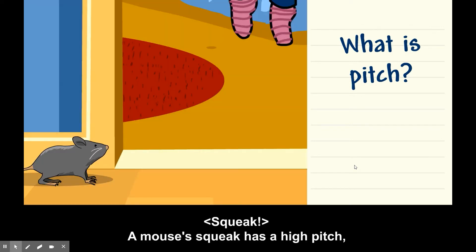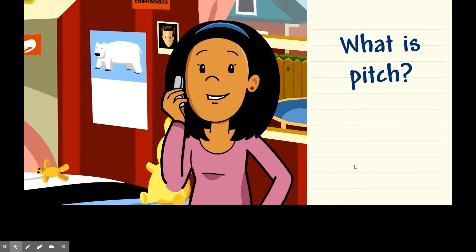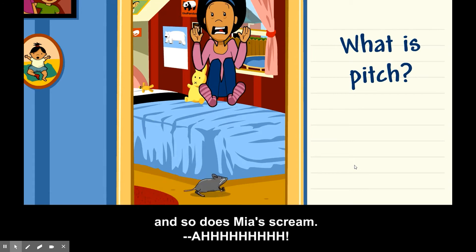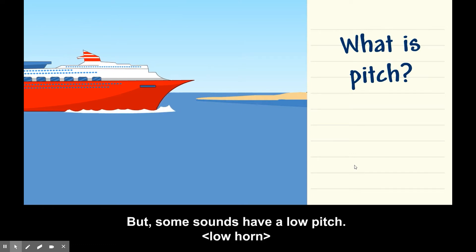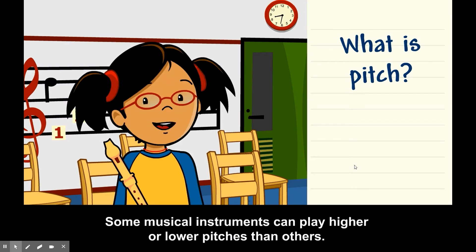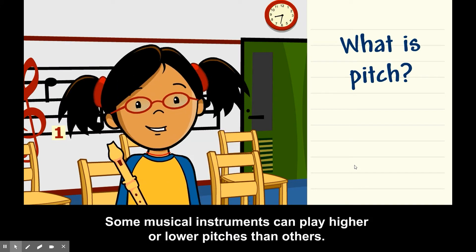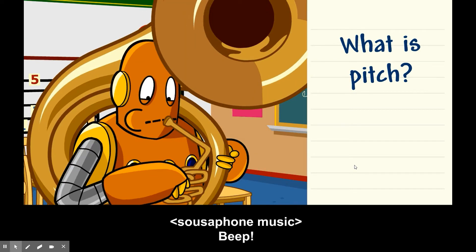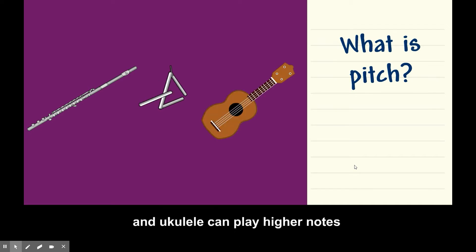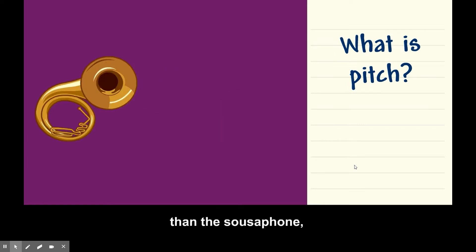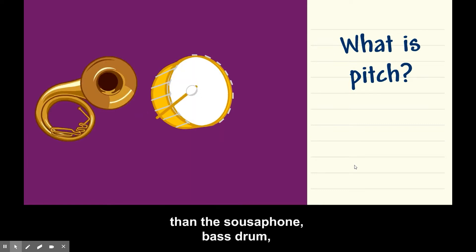The mouse's squeak has a high pitch, and so does Nia's scream. But some sounds have a low pitch. Some musical instruments can play higher or lower pitches than others. The flute, triangles, and ukulele can play higher notes than the sousaphone, bass drum, and bassoon.